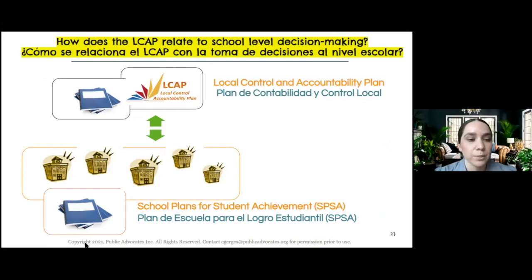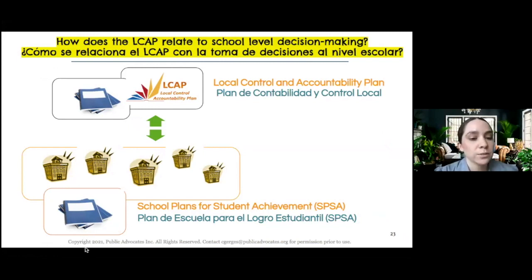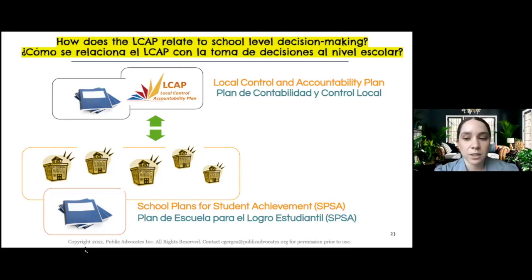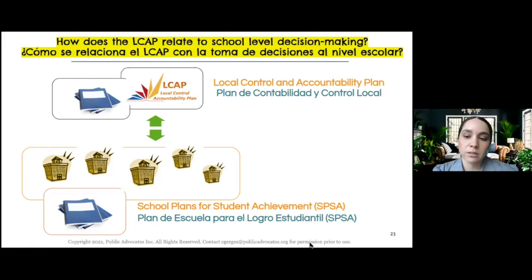It's a big opportunity to impact the plan because, although it gets revised every year, this year is particularly significant because they're rewriting the plan completely. There's also the School Plan for Student Achievement — the SPSA — which is like the LCAP but at the school level. Both plans have to align with each other; the SPSA should inform the LCAP ideally. Both plans must be adopted by the end of the school year.